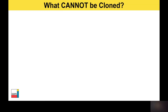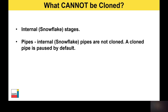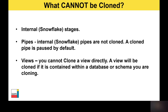What can't be cloned? Internal Snowflake stages cannot be cloned, and internal pipes within Snowflake are not cloned either. If you do clone an external pipe, it is paused by default — this is to prevent you from mistakenly cloning a pipe and having data flow into the clone that you don't want, creating duplicate records. Views are also interesting — you can't clone a view directly; however, you can clone a view if it's contained within the database or schema that you're cloning.